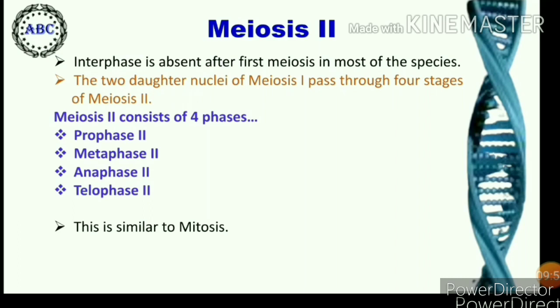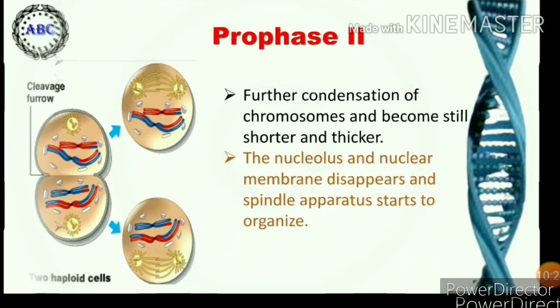In meiosis second, it is similar to mitosis. It differs from mitosis in some events only, which is why it is also called meiotic mitosis. It shows four phases: prophase second, metaphase second, anaphase second, and telophase second. The two haploid nuclei of meiosis first pass through these four stages of meiosis second.